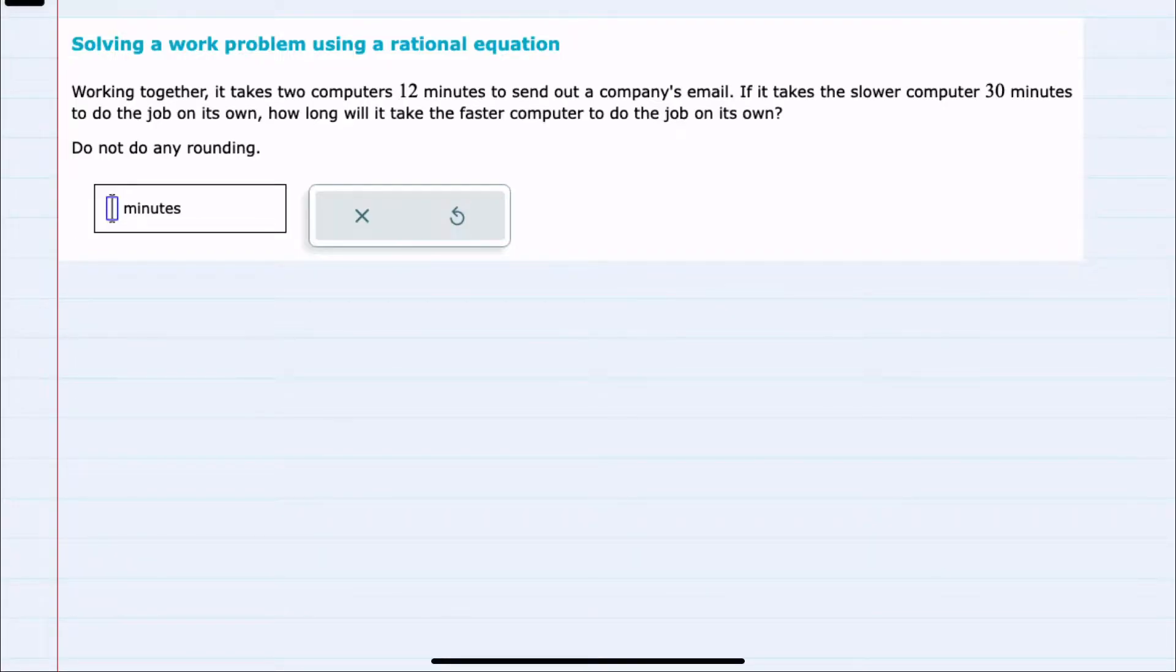We're told that working together, it takes two computers 12 minutes to send out a company's email. It takes the slower computer 30 minutes to do the job on its own, and we want to know how long will it take the faster computer to do the job on its own.